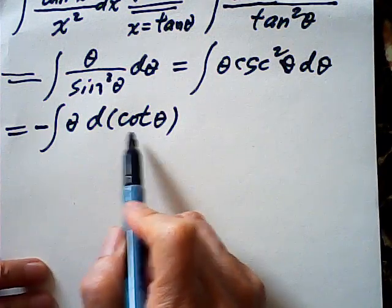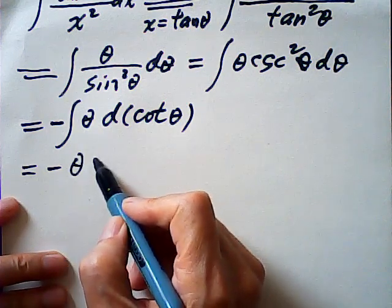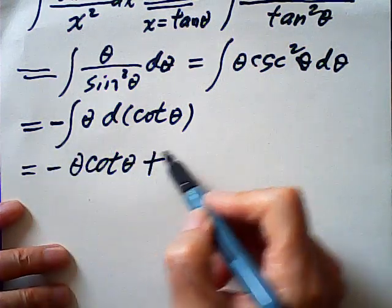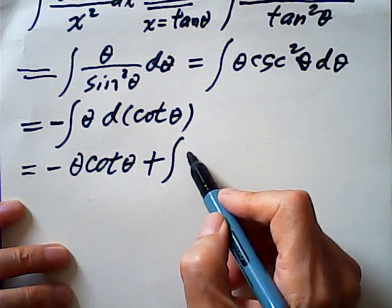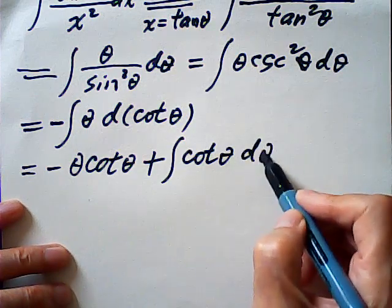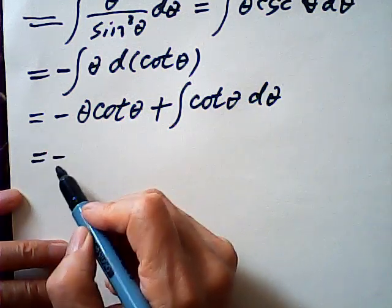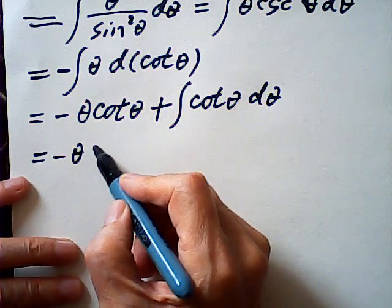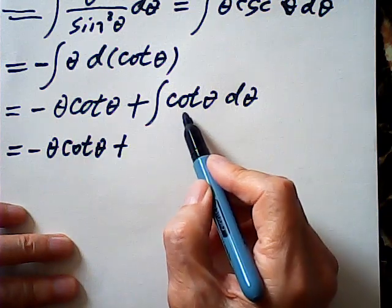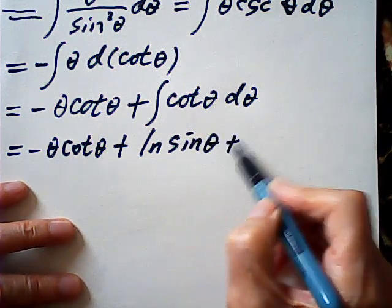This is u, this is dv — u dv. So it becomes uv minus integral v du. The minus becomes plus, so we get cotangent theta with du equal to d-theta. This gives negative theta cotangent theta, plus the integral of cotangent theta, which is log sin theta, plus C. So the integral is done.